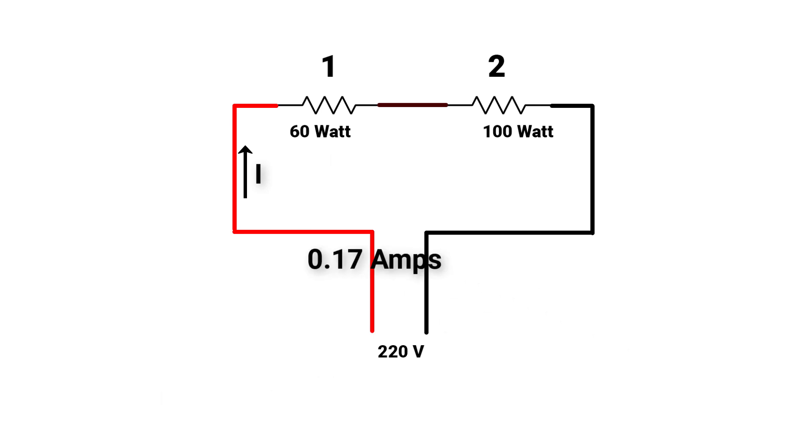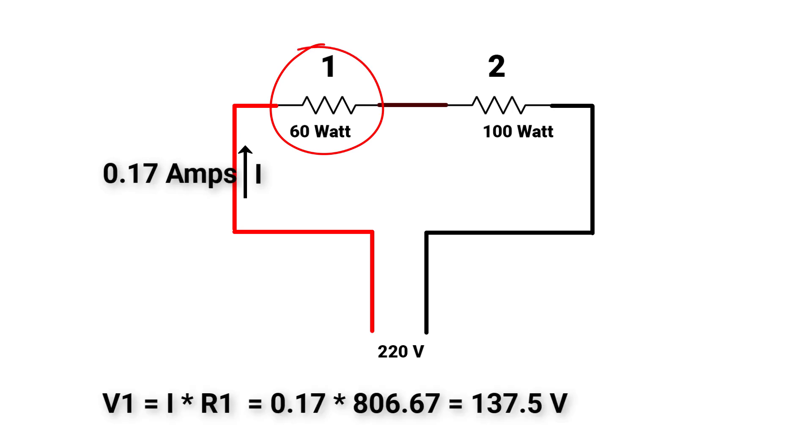Now, we can calculate the voltage across each lamp and the actual consumed power in this circuit for each lamp. Voltage across lamp number 1 is equal to I times R1, which will equal to 137.5V.